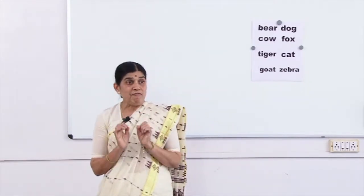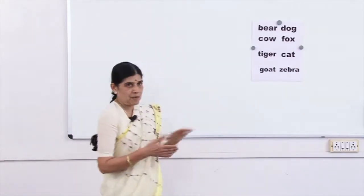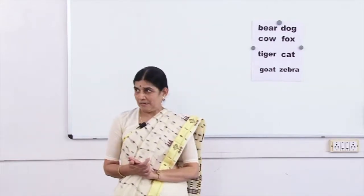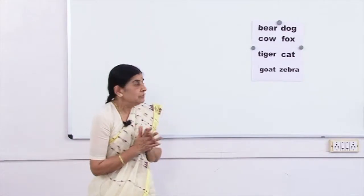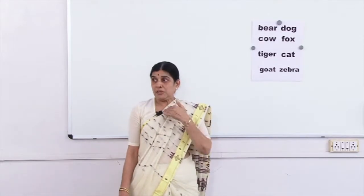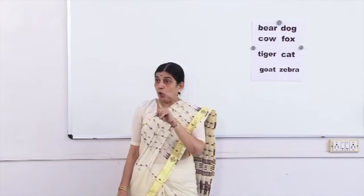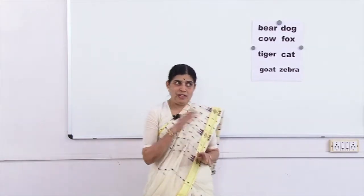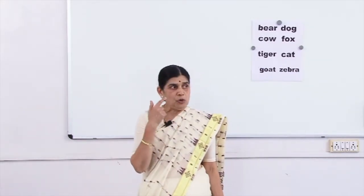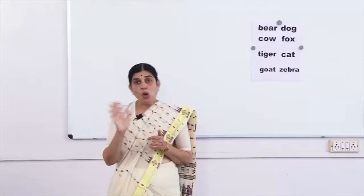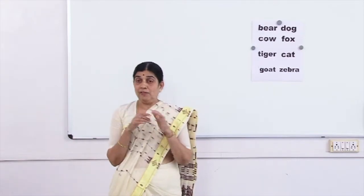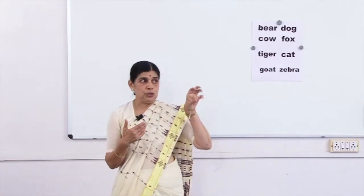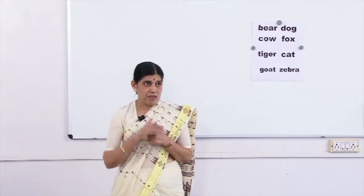First we will be familiar with the procedure. I have brought a set of examples. They are all animals, so there are many characteristics or attributes with them. There is a specific concept in my mind. I will tell you one positive example. When I tell you a positive example, you have to think about all the different characteristics or attributes of that particular example.